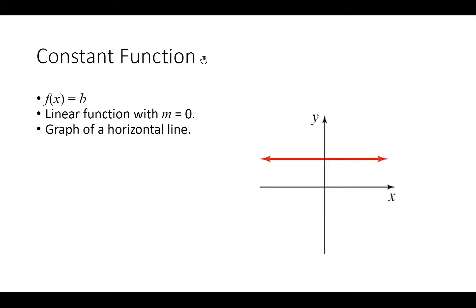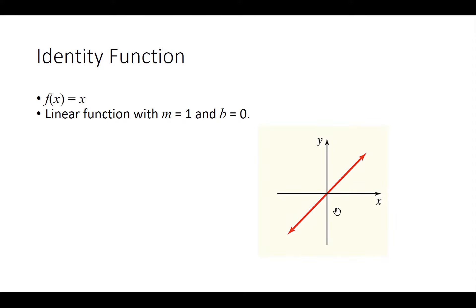Let's start with the graph of the linear function, also called the constant function, when f(x) equals some constant. That is a horizontal line — a linear function with slope zero. Another type is the identity function, where the input and output are the same.